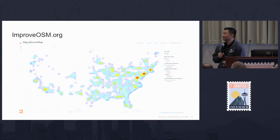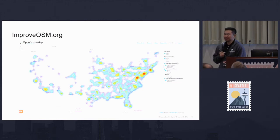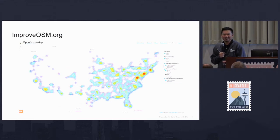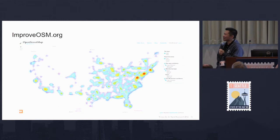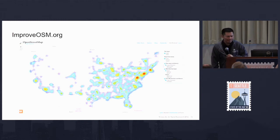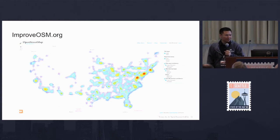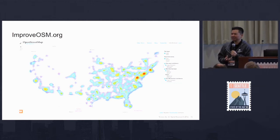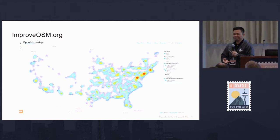If you go to improveosm.org, this is the first thing you see. There is a catch though - if you want to edit, you need to log in with your OSM account. You can still browse around the site, but you cannot make any edits. The heat map will show you where all these different locations are - where we've identified locations that are either missing a turn restriction, a missing road, or a highway that needs to be validated.